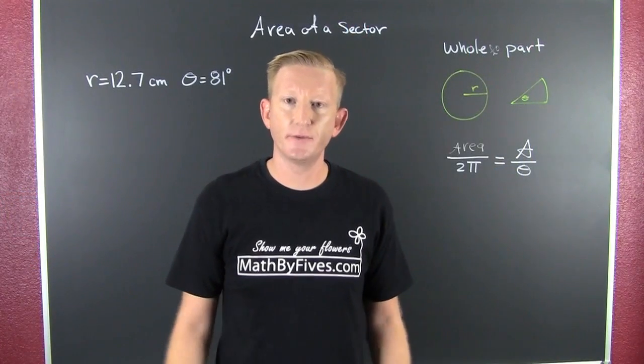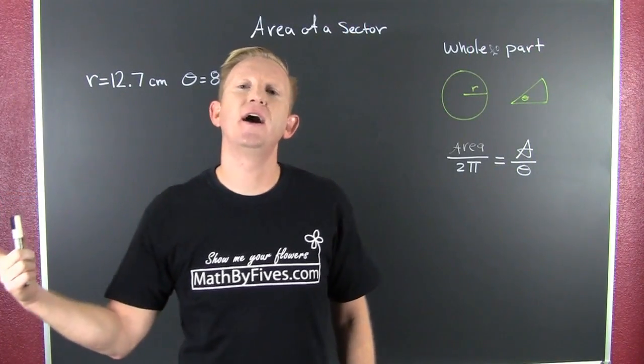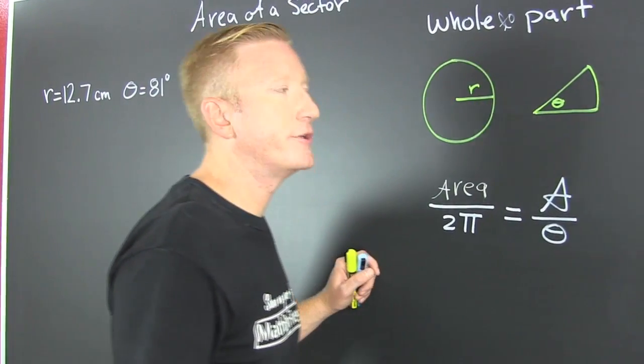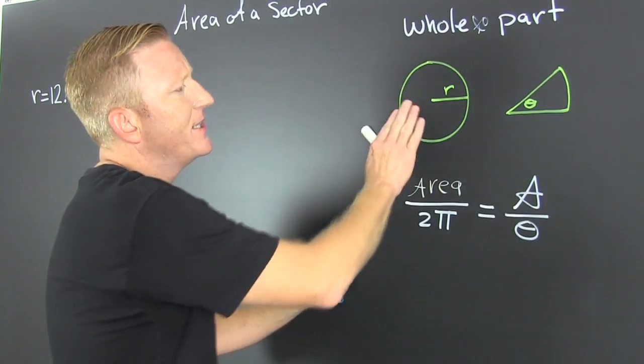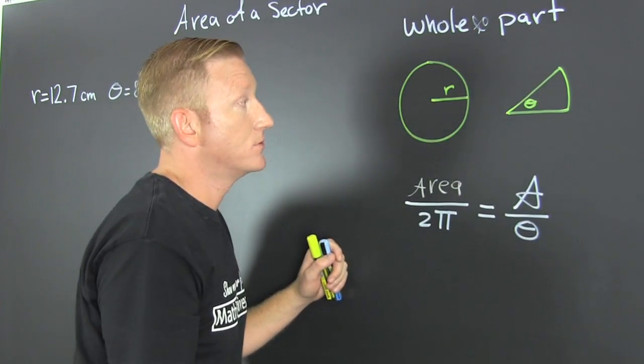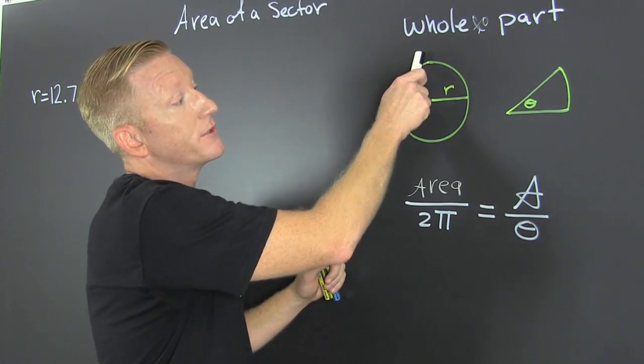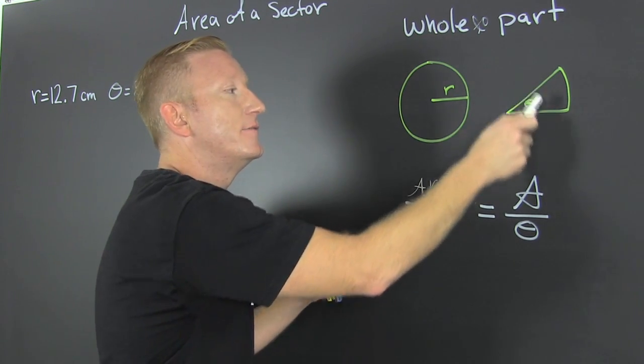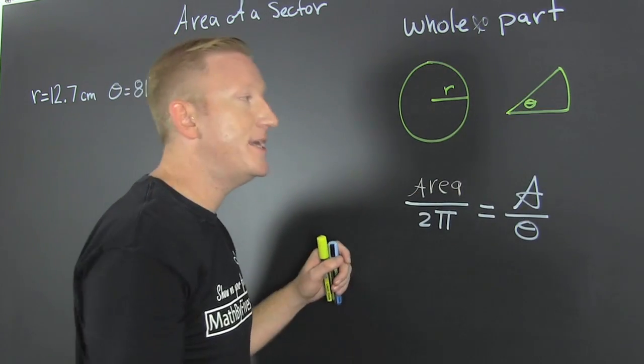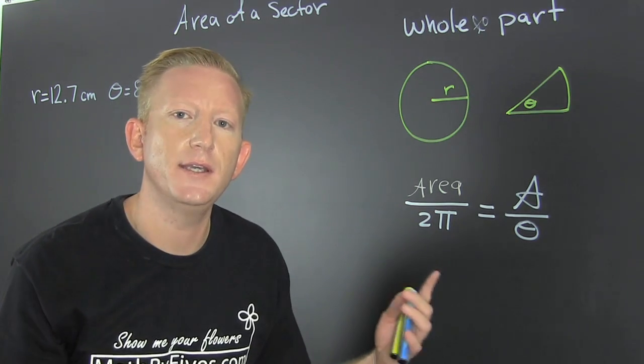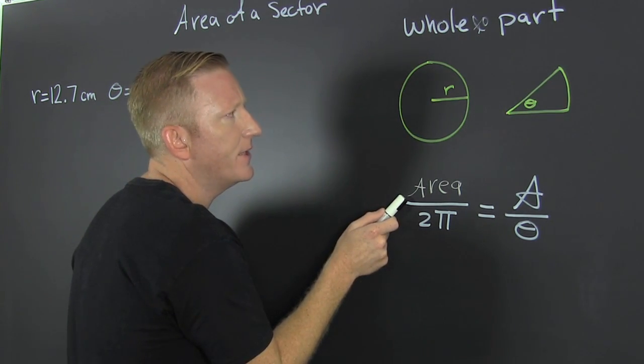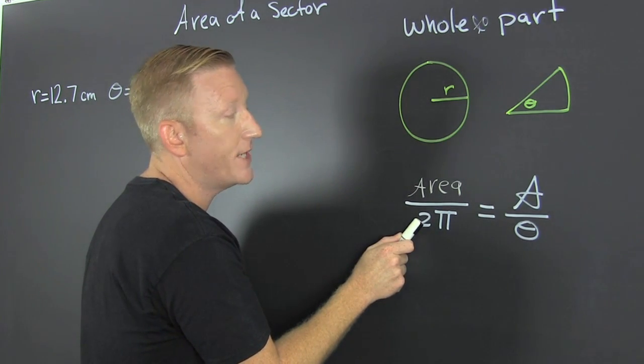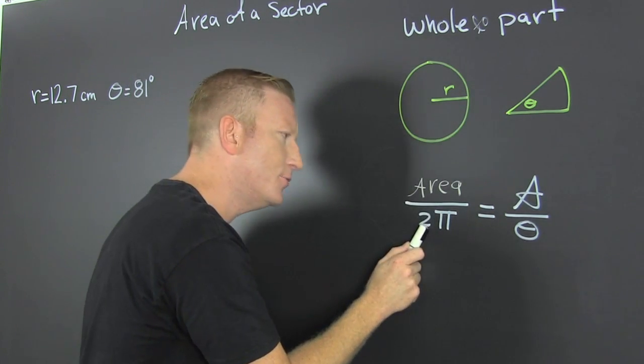We're trying to find the area of a sector. But first, let's see how we can find that formula. I need to set up another proportion. I need to set up the proportion between the whole circle and the part of circle that we're trying to find the area of. We're trying to find how much is inside that sector. We set up the area of the whole thing divided by the rotation it takes to get there, and it's two pi.